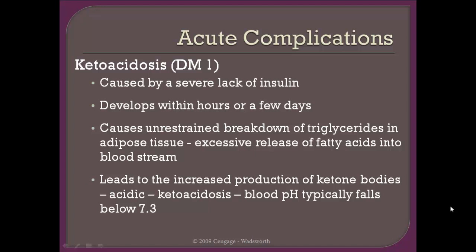Ketoacidosis is caused by a severe lack of insulin, and there are a couple different ways that can happen — either when a person is having the autoimmune response that ultimately ends up killing the beta cells, or there could be other situations as well. After a person has been diagnosed with type 1, we'll talk about the multitude of things that can cause a severe lack of insulin. Ketoacidosis can develop very quickly, and ultimately what occurs is that the body cannot utilize the glucose that it has because of the lack of insulin, and thus the body needs energy.